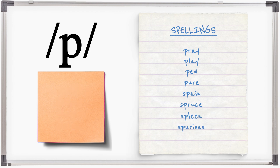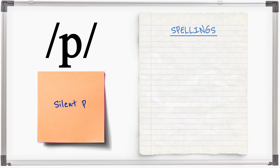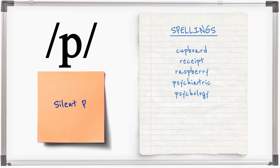The letter P is silent in several common words: cupboard, receipt, raspberry, psychiatric, psychology, coup, pneumonia, to name a few.